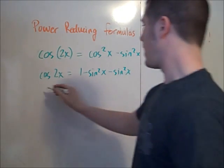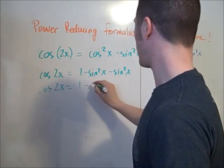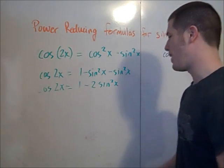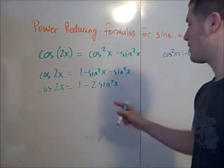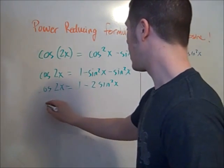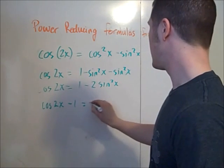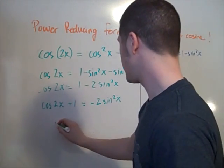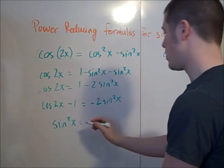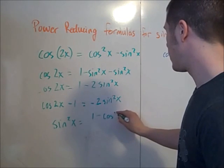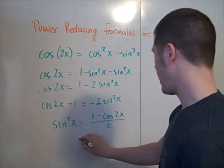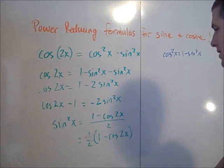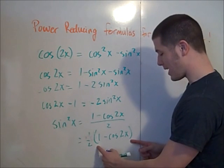I can combine like terms on the right-hand side, so cosine 2x is 1 minus 2 sine squared x. To get sine squared x by itself, subtract 1 from both sides: cosine 2x minus 1 is negative 2 sine squared x. Now divide both sides by negative 2, and we find that sine squared x is equal to 1 minus cosine 2x, all over 2 — or equivalently, 1 half times 1 minus cosine 2x. That's the power reducing formula for sine squared x.